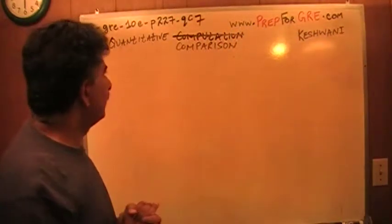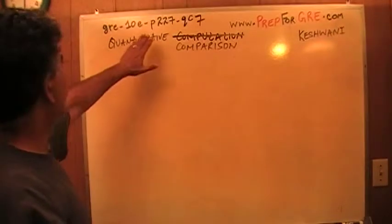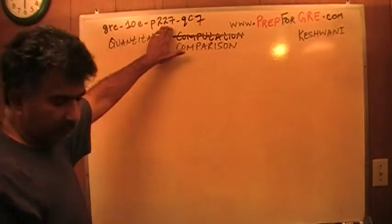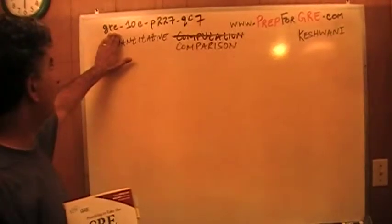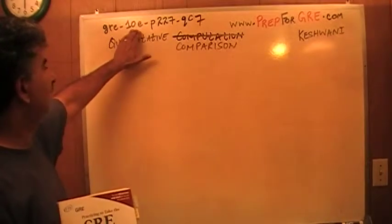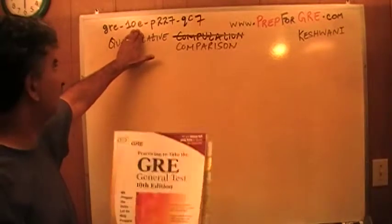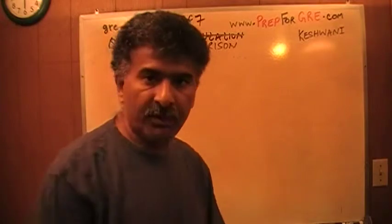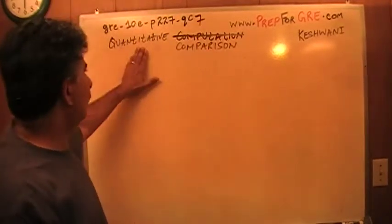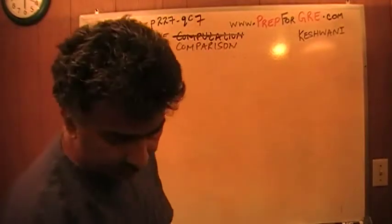Let's take a look at it. The problem that I'm about to solve is the one you're going to find on page 227. The tag you want to look for is GRE-10E for the 10th edition. Page 227, quantitative comparison, number 7.